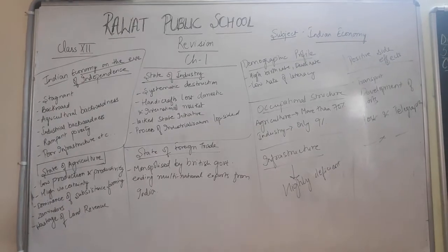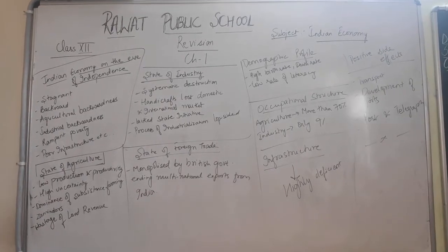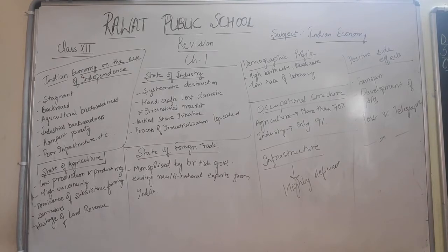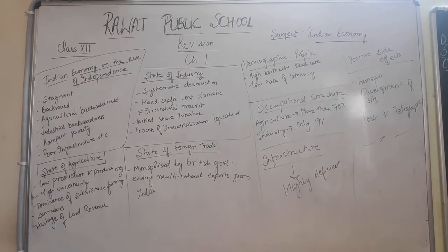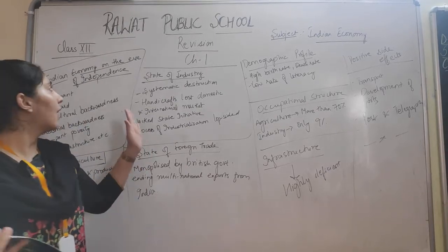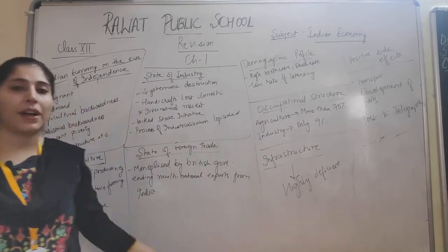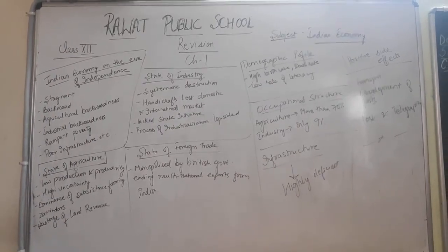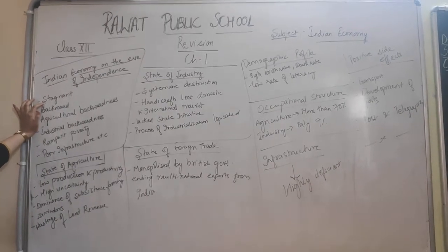So the first topic is the state of the Indian Economy on the Eve of Independence. As we all know, when the British left India, the Indian economy was in a state of misery. It was suffering heavily from colonial exploitation across the agricultural sector, industrial sector, and international trade. It was quite backward and stagnant.